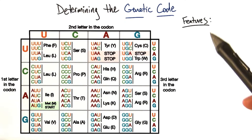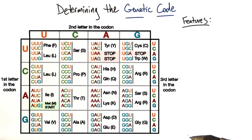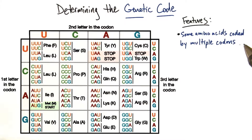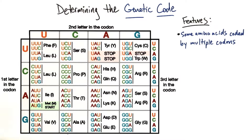There are some important features we can pick up on from the genetic code. The first is that some amino acids are coded by multiple codons. In the answer to the last exercise, we explored this a little bit and saw that alanine is coded by GCU, GCC, GCA, and GCG. This happens for some of the other amino acids as well.